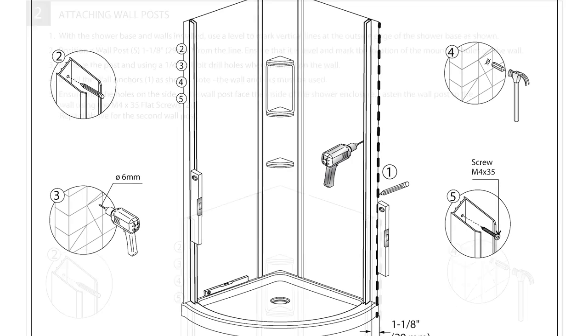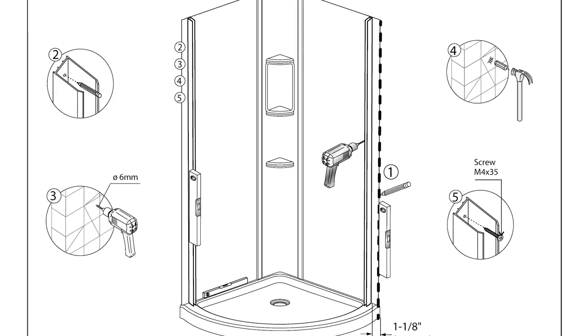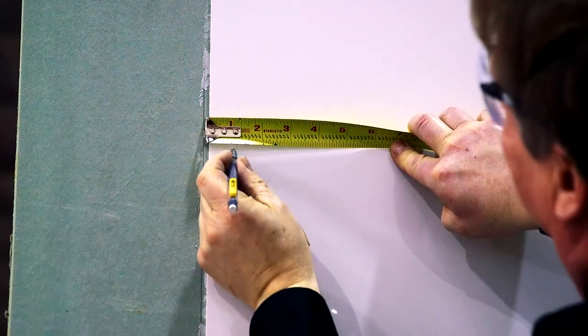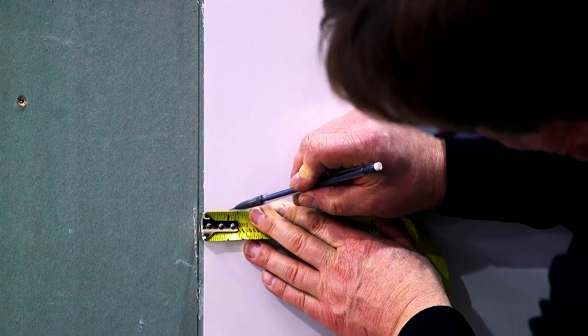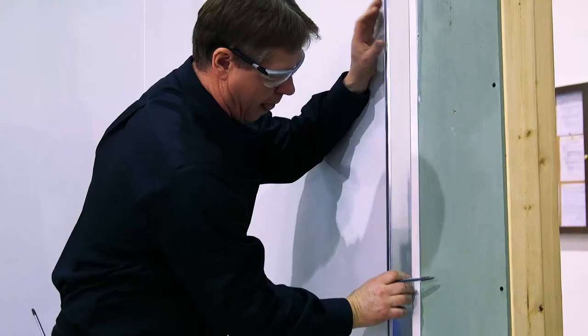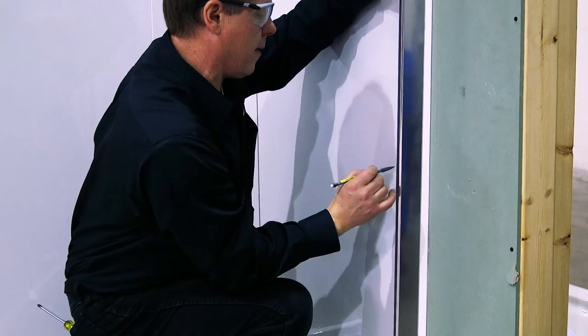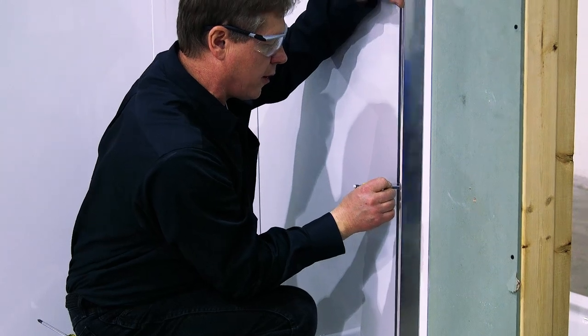With the shower base and walls installed, use a level placed at the outside edge of the shower base to mark a vertical line on both sides. Then position a wall post one and one-eighth inch from the drawn line. Ensure that the wall post is plumb, then mark the location of the mounting holes on the wall.